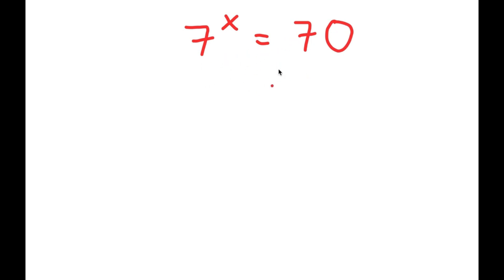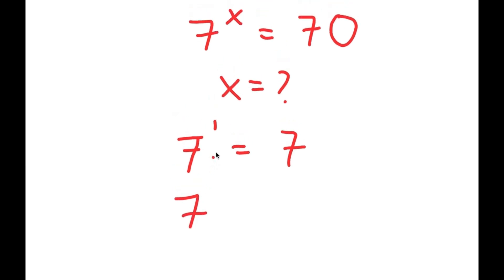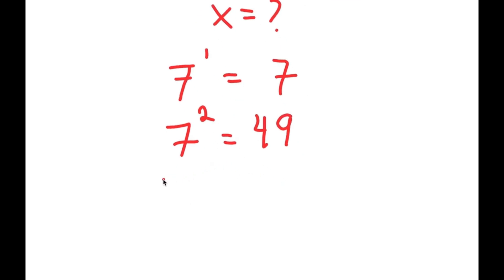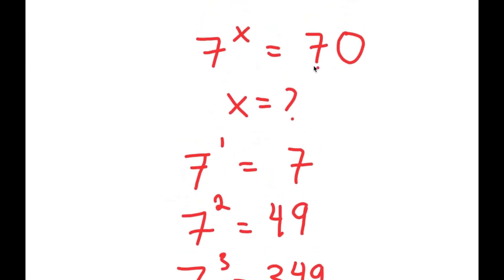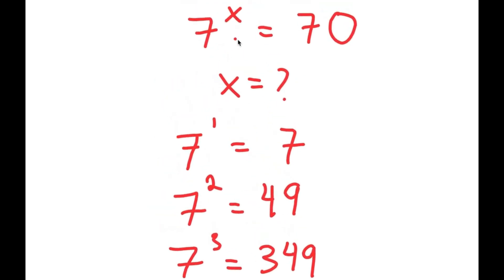This is an exponential equation and x is the exponent we're solving for. Let's try plugging in some numbers. 7 to the power of 1 is equal to 7. 7 to the power of 2 is equal to 49. 7 to the power of 3 is equal to 343. So the value of x that makes 7^x equal to 70 is going to be a decimal somewhere between 2 and 3.